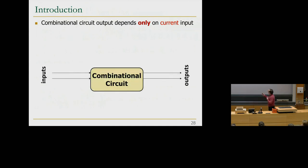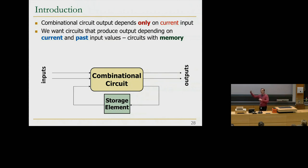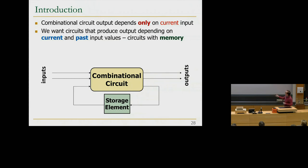A combinational circuit's output depends only on the current input. We want circuits that can produce output depending on current as well as past input values — circuits with memory. That way you can remember the previous sum and generate the next sum for the next bit, keeping track of previous sums for all 31 bits and producing a 32-bit result using only a single-bit addition circuit.